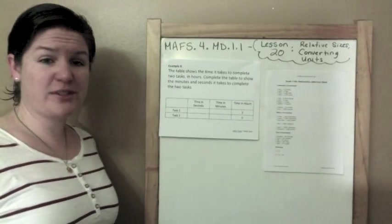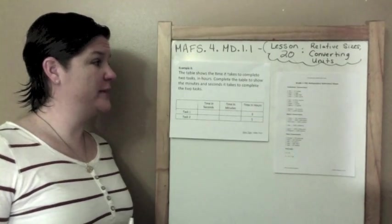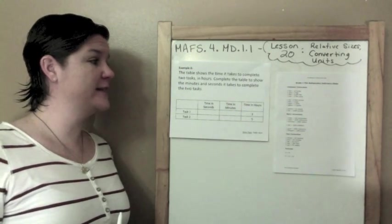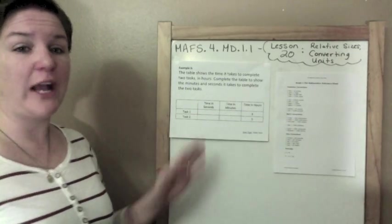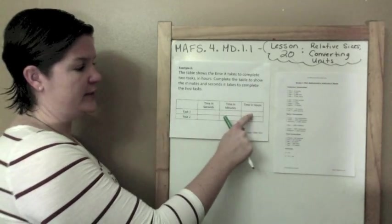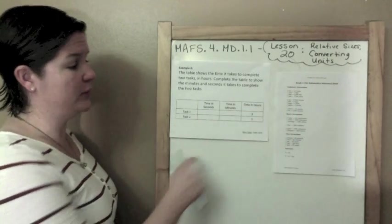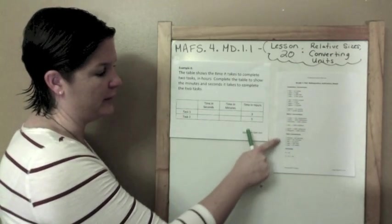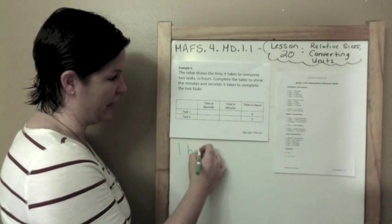Last one. Example 6. And this one's going to be a doozy. The table shows the time it takes to complete two tasks in hours. Complete the table to show the minutes and seconds it takes to complete the two tasks. So this is a table item where you're actually recording data within the table. So I see over here that task one takes three hours to complete. Task two takes five hours to complete. We need to convert these hours to minutes and then to seconds. So let me find our minutes, or our hours. One hour.